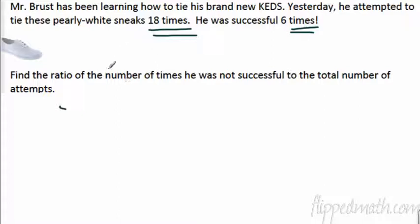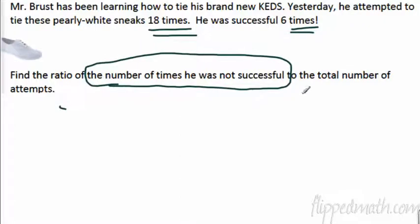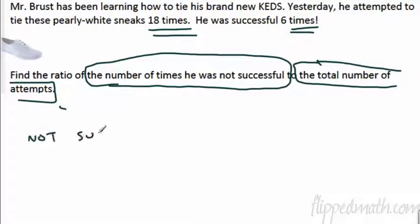All right, so find the ratio of, so I'm going to mark this, the number of times he was not successful. All right, so I'm going to circle that to the total number of attempts. All right, so that's basically what we want. So we want not successful all over the total number of attempts.